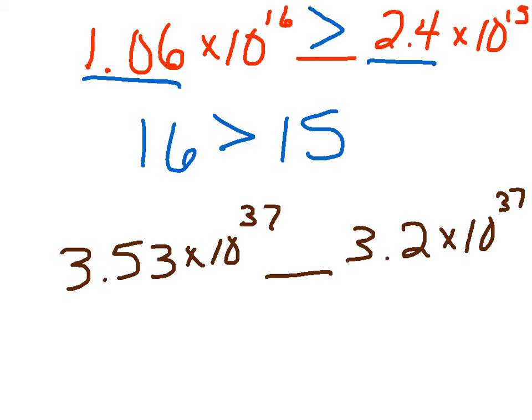Let's take this example: 3.53 times 10 to the 37th, and 3.2 times 10 to the 37th. I can't compare these two exponents because they're exactly the same. If your exponents are equal.